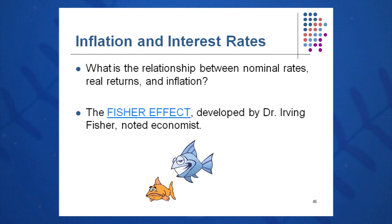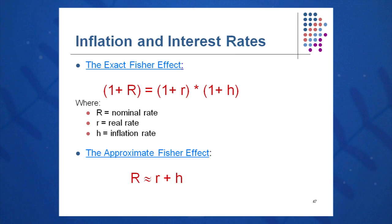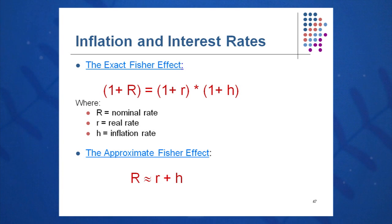So real rates are a percentage change in what you can buy with your dollars, and nominal rates are the percentage change in the number of dollars you have in your possession. Dr. Fisher said one plus big R — one plus the nominal rate of return, or total return — is equal to one plus little r times one plus little h. We can approximate this by multiplying out to get one plus r plus h plus rh, and rh is very, very small for interest rates between about 5 and 20 percent. So the approximate Fisher effect gives us big R equals little r plus little h.